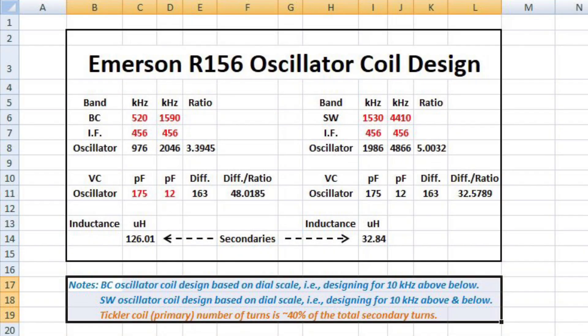With the receiver itself spec'd at 540 to 1580, if you look at the dial scale and the wiggle room on the tuning condenser, you can see my design for the broadcast oscillator and shortwave oscillator — I went 10 kilohertz above and below. You can also see my note on the tickler coil: the primary was about 40% of the total number of turns applied across the broadcast oscillator section and the shortwave section of the coil.